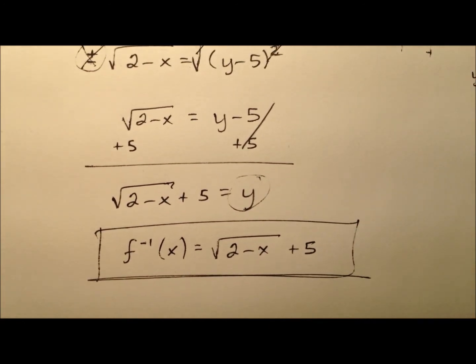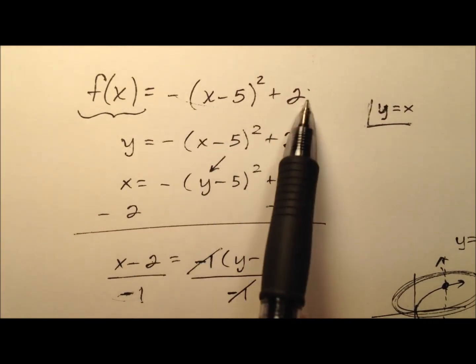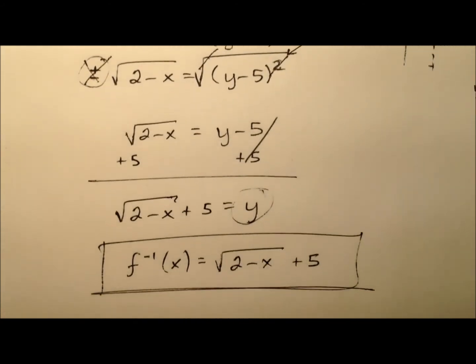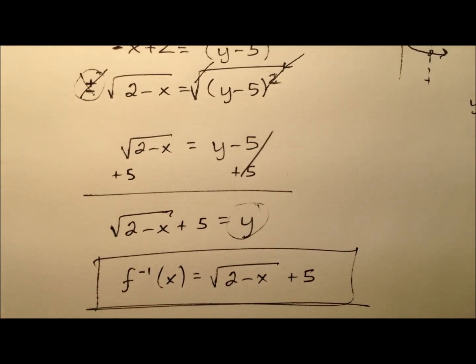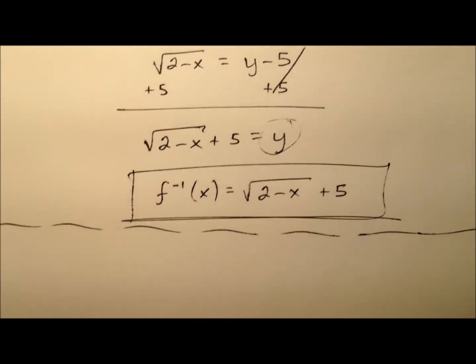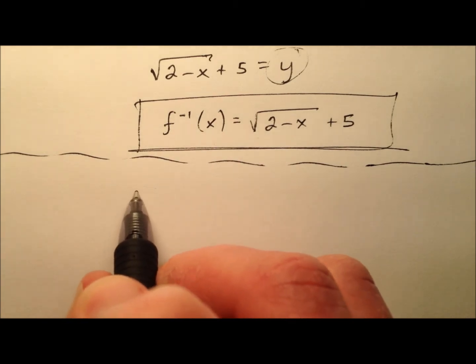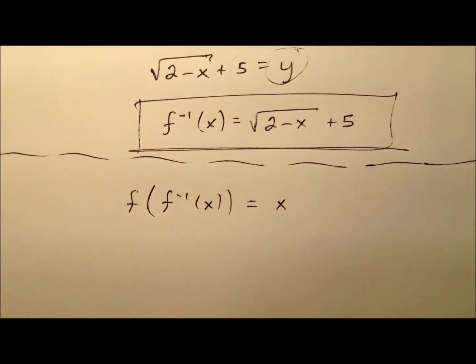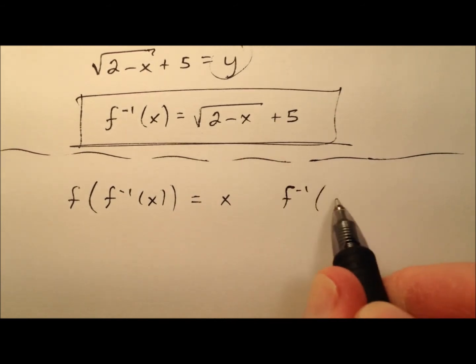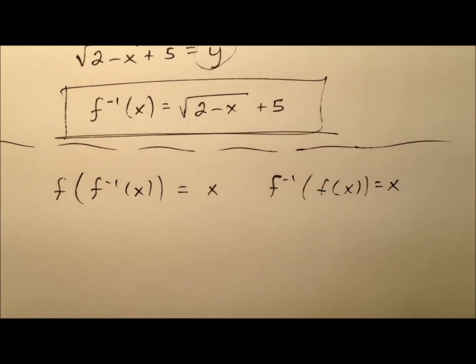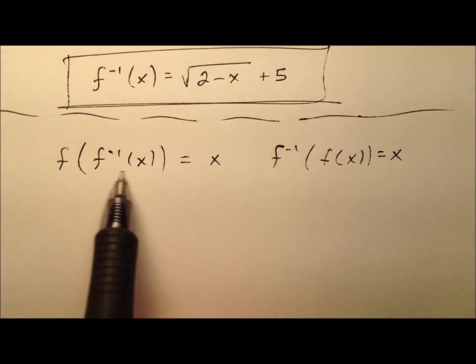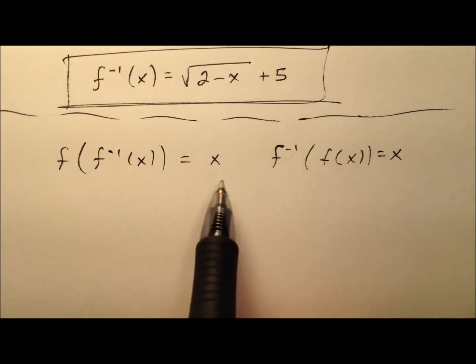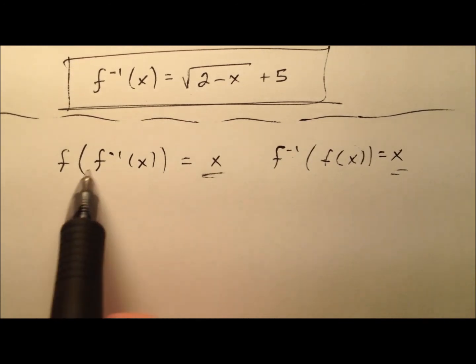So we have now found the inverse function for our original function here. So this is a quadratic function written in vertex form. And we now end up with the inverse function, which is going to be a square root function. And so what we can do is a couple of things algebraically, we can kind of verify that indeed they are inverses of one another. And we can do that by taking the original function and, you know, composing it with the inverse, and we should get x. And it doesn't matter if you go that way or this way. So you'll see in this case the inverse is inside of the function, in this case the function is inside of the inverse, but in either case you should end up with x. So let's just go ahead and do this one.